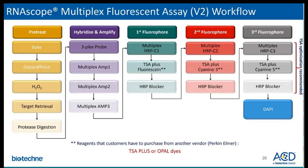Here is a more detailed workflow for the multiplex fluorescence V2 assay. This is a TSA-based assay. Pretreatment is completed first, followed by target probe hybridization and subsequent amplification steps. This differs from the previously mentioned fluorescence assay as each channel is developed sequentially. The amp 1, 2, and 3 steps are a pooled combination of the pre-amplifier and amplifier molecules so that the amplification trees begin to form simultaneously. This assay uses fluorophores in the C1, C2, and C3 channels respectively, but these may be swapped as per your preference. Please note this assay requires the purchase of the TSA Plus fluorophore or opal dye from Perkin Elmer.